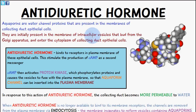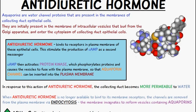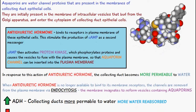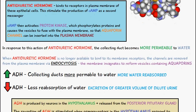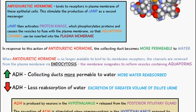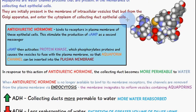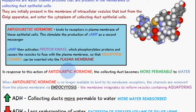We have a hormone called antidiuretic hormone, which is produced by the posterior pituitary gland. It binds to receptors in the plasma membrane of these epithelial cells and stimulates the production of cyclic AMP as a secondary messenger, which then goes on to activate protein kinase.